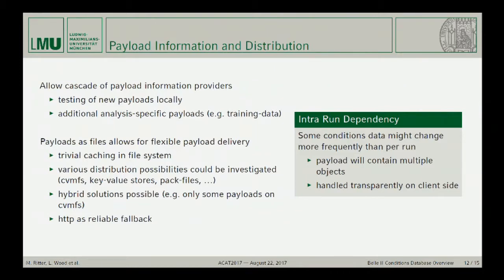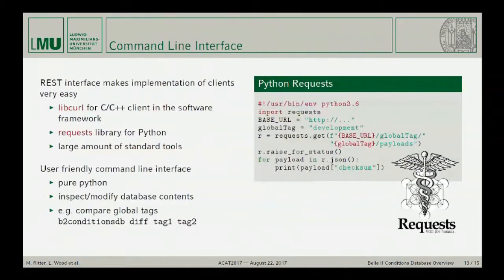We always have HTTP as a reliable fallback. We also have a command-line interface so you can easily handle this. There are a million very good libraries for working with HTTP — if you use Python, I really suggest the requests library, because then looping over all the lists of available payloads can be done in like five lines of code. This allows us to provide a very user-friendly conditions database command-line tool, so that you can, for example, ask it to show you differences between two global tags. It will download the information and show you — like a git diff — what has changed between two different tags, so you can easily see what changed.